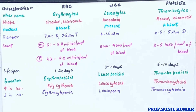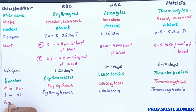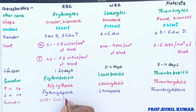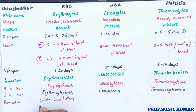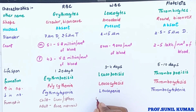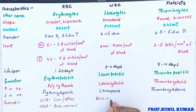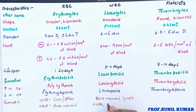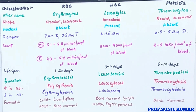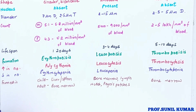Where are RBCs formed? In children, RBCs are formed in the liver and spleen, but in adults they are formed in the red bone marrow. WBCs are formed in the bone marrow — white bone marrow or yellow bone marrow — and also in lymph nodes and Peyer's patches. Platelets are also formed in the bone marrow.